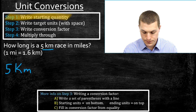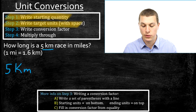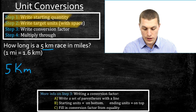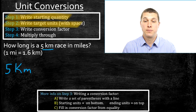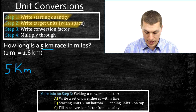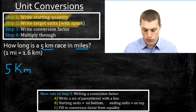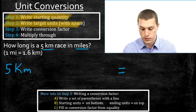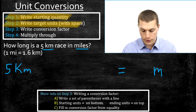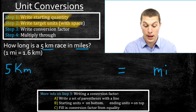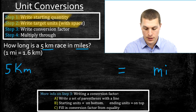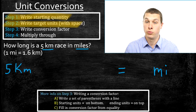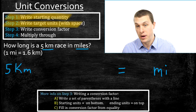Step two says write the target units with a space. The target units are basically what we want to get to, and in this case it's miles. So we write an equal sign and put miles, which we'll abbreviate MI, leaving a space for our answer. This has set up our problem: we want to go from kilometers to miles.